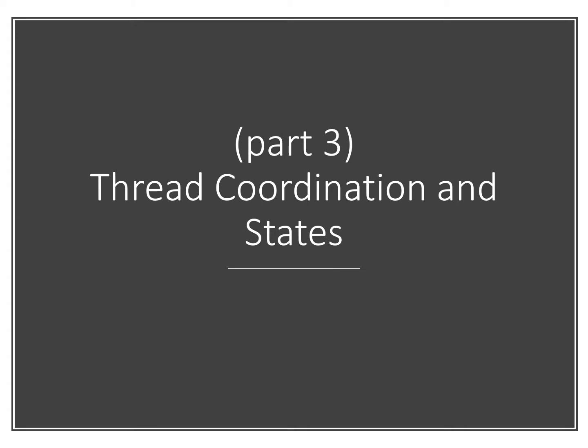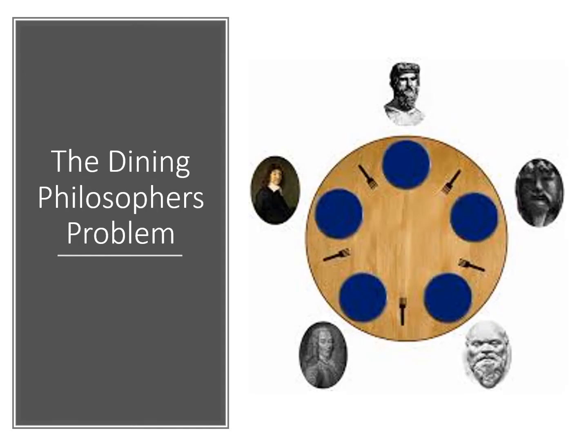Let's continue with part three of week two material on Java and threading. This section talks about thread coordination and thread states, and we're going to illustrate the problems that we get with thread coordination using the dining philosophers problem. This was originally introduced by Dijkstra to illustrate the problems that occur when different threads need to access the same resource.